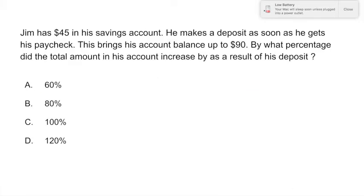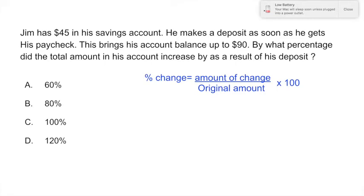The final question, question 5: Jim has $45 in his savings account and makes a deposit as soon as he gets paid, bringing his balance up to $90. They're asking by what percentage did the total amount increase — the percent change. The formula is: percent change equals the amount of change divided by the original amount, multiplied by 100. You multiply by 100 because they're asking for a percentage; if you don't, just move your decimal point over at the end.